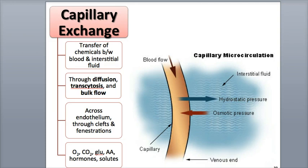Larger chemicals, like plasma proteins and red blood cells, are too big to pass across the walls of continuous and fenestrated capillaries, or through their clefts and fenestrations. These chemicals are more easily transferred in sinusoids, such as those found in the liver and red bone marrow, due to the presence of large intercellular clefts in their vessel walls.